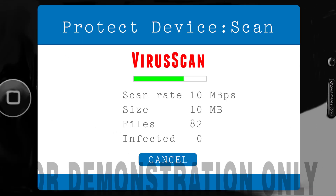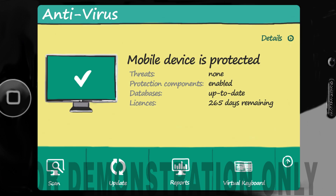Smartphones and tablets will often have some form of protection already installed to prevent this, and you can also use a third-party product. But whichever you choose, make sure it's updated regularly. And when you install an app, use a trusted site, as criminals can get malware onto our devices by hiding it in apps.